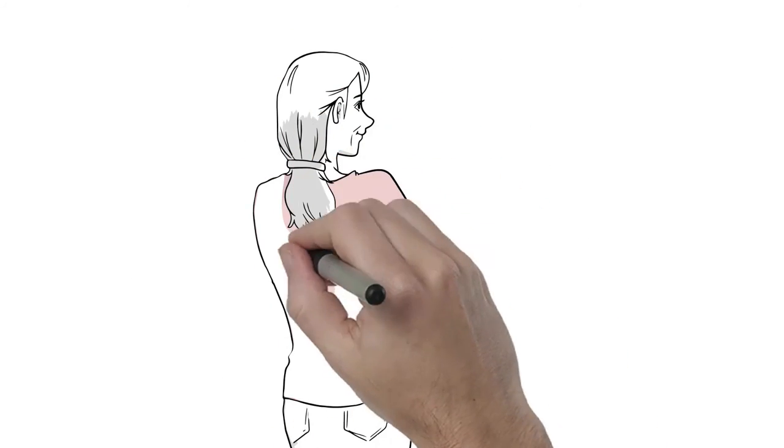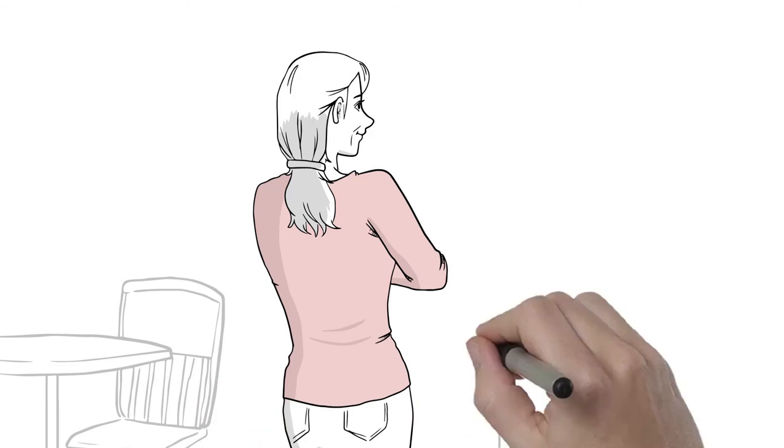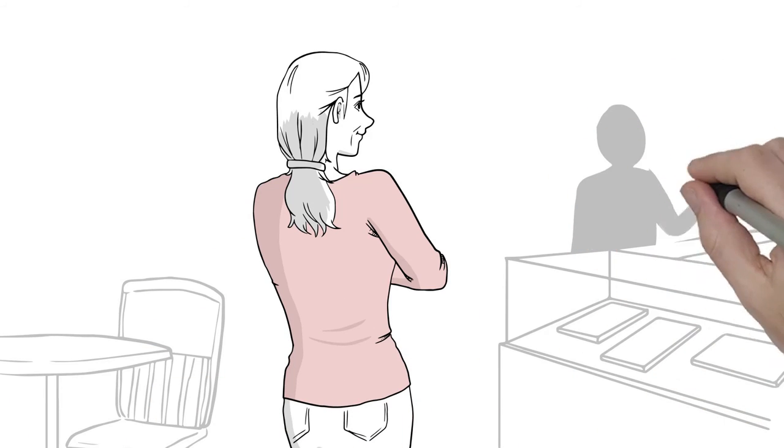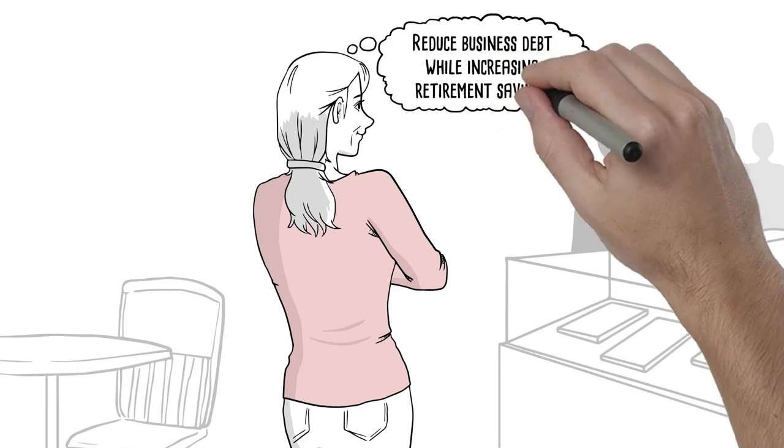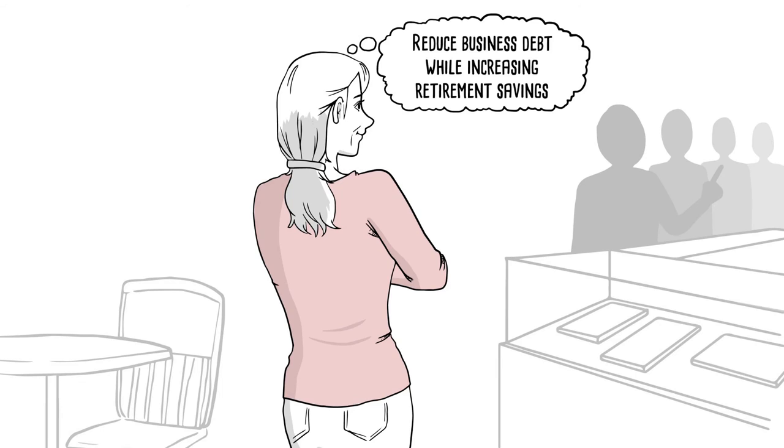Chris owed $35,000 on her printing equipment lease. So she used her Bank on Yourself plan to pay off the lease, and now she puts that money into her policy every month, where she's building a solid, guaranteed nest egg for retirement.